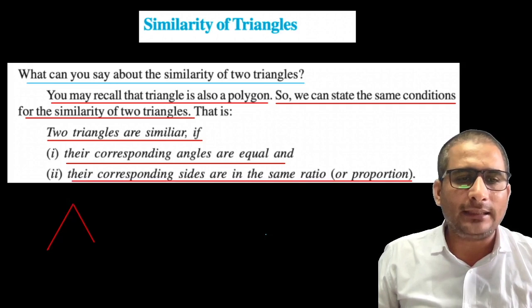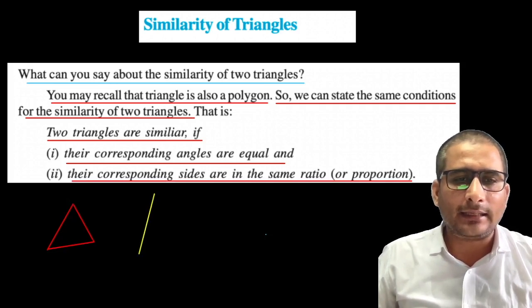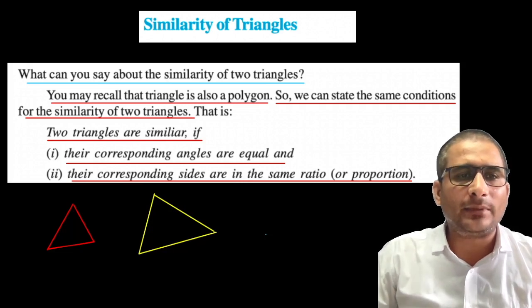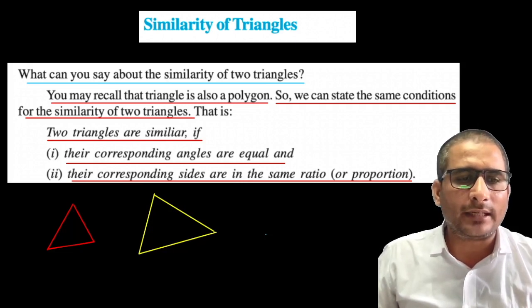Suppose one triangle is this and the second triangle is this. So when these two triangles are similar, the first condition is that their angles should be equal.